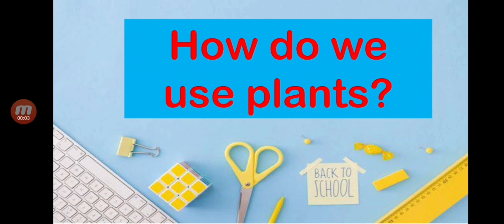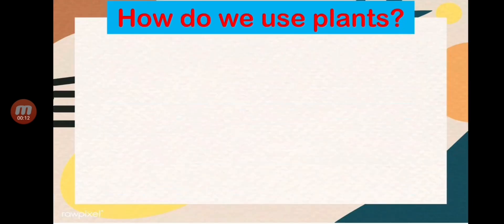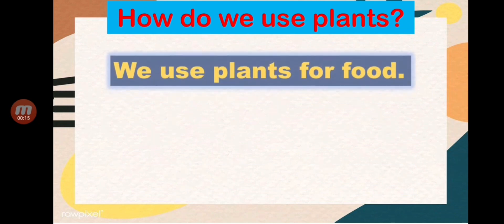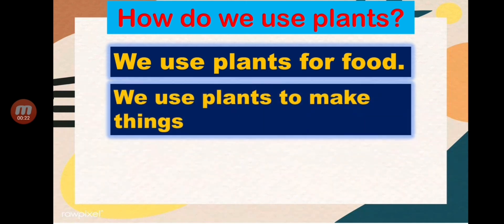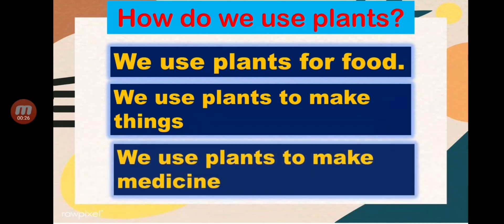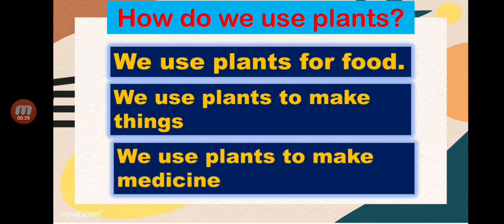Our topic to be discussed is all about how do we use plants. There are three things: first, we use plants for food; second, we use plants to make things; and third, we use plants to make medicine.